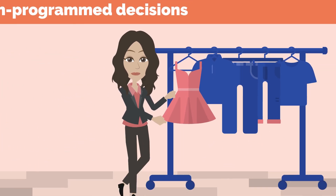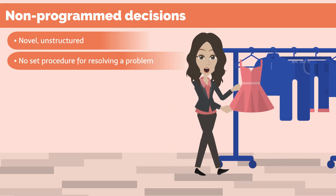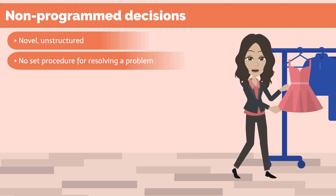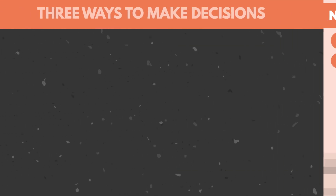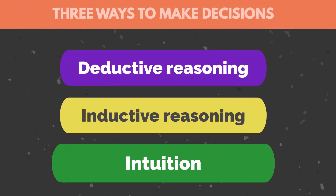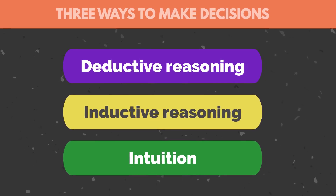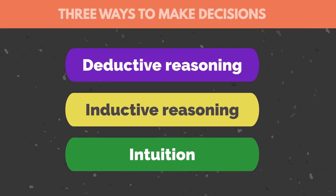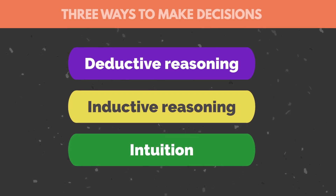In contrast, non-programmed decisions are novel. They're unstructured and we don't have preset procedures to solve the problem. They're the types of decisions that we need to learn to categorize. In this video, I'm going to describe three broad ways of making decisions. My hope is that by understanding these models, you'll be able to better classify your unprogrammed decisions and take advantage of the best process to make these tough decisions.